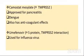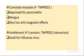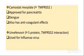TMPRSS2 can be inhibited by camostat mesylate — approved for pancreatitis in Japan and dengue fever, with anticoagulant effects. Another drug, umifenovir, approved for influenza in the United States, inhibits the spike protein and TMPRSS2 interaction. In summary, three drugs to inhibit viral entry: umifenovir, camostat, and hydroxychloroquine. Convalescent plasma therapy — by providing antibodies — also prevents viral fusion.